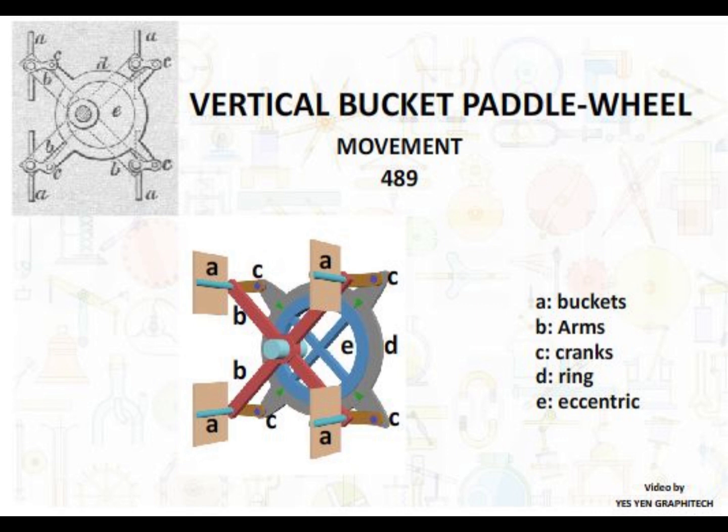Cranks C are attached to the pivots. Each crank is fixed to the respective bucket at one end and to the arm of a ring D at the other end, which is fitted loosely to a stationary eccentric E.